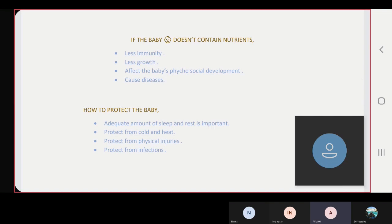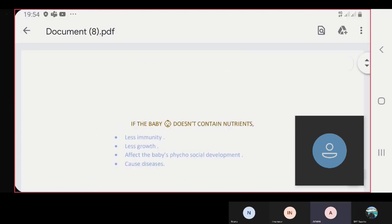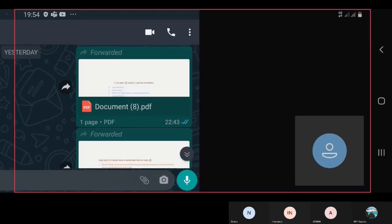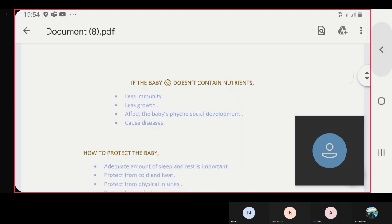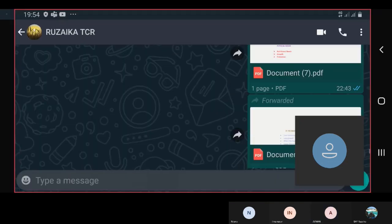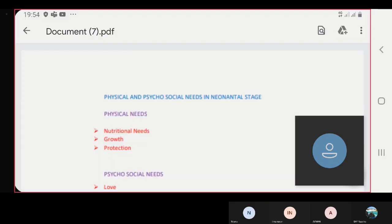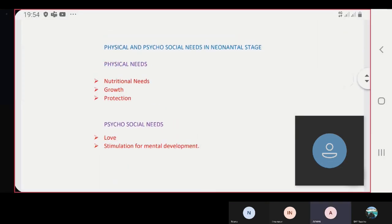Next, we'll see about psychosocial needs. Psychosocial needs include love. Love while breastfeeding, hugging, and cuddling the baby. Next, stimulation for mental development.